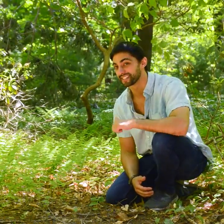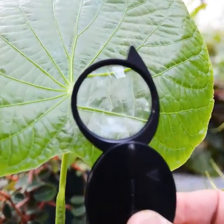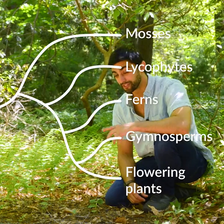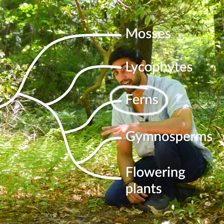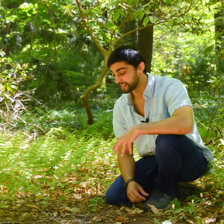Hey everyone, today we'll be talking about the group of plants that I study: ferns. Let's botanize. As we've said before, ferns are one of the five major lineages of land plants, and ferns are actually the second most species-rich group of vascular plants with 11,000 species.